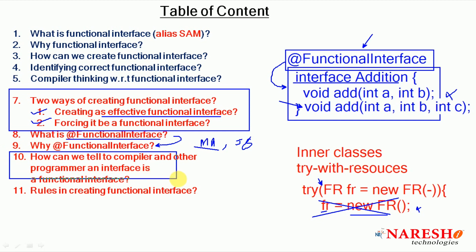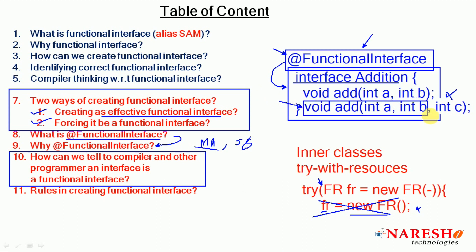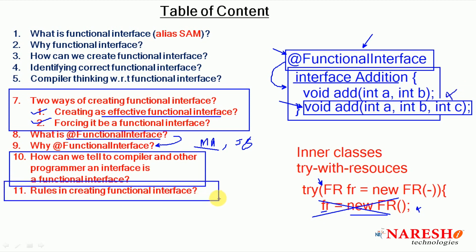@FunctionalInterface is a marker annotation used for marking an interface as a functional interface. Using @FunctionalInterface, we can explicitly declare an interface as a functional interface, so that if you try to add one more abstract method, the compiler will throw an error. This informs the compiler and other programmers that the interface is a functional interface and must contain only one abstract method.